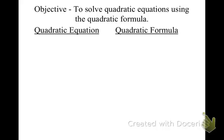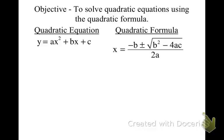So let's start with the quadratic equation. The quadratic equation is y equals ax squared plus bx plus c. Whereas the quadratic formula is x equals negative b plus or minus the square root of b squared minus 4ac, all over 2a.